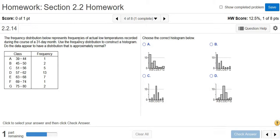The frequency distribution below represents the frequencies of actual low temperatures recorded during the course of a 31 day month. Use the frequency distribution to construct a histogram. And then it asks us if the distribution seems to be approximately normal.